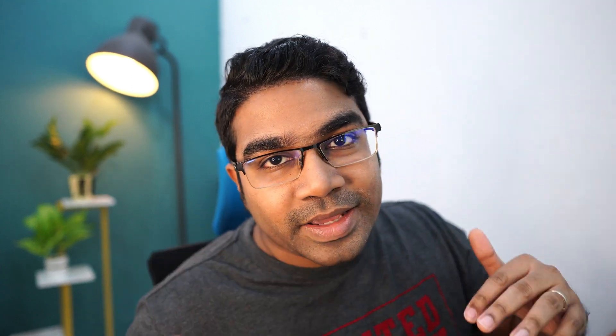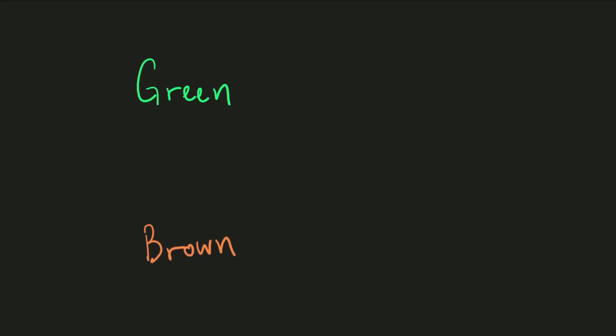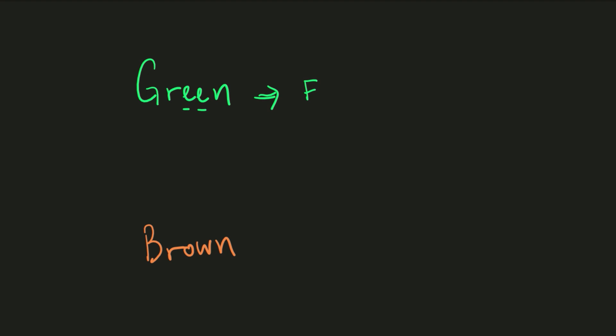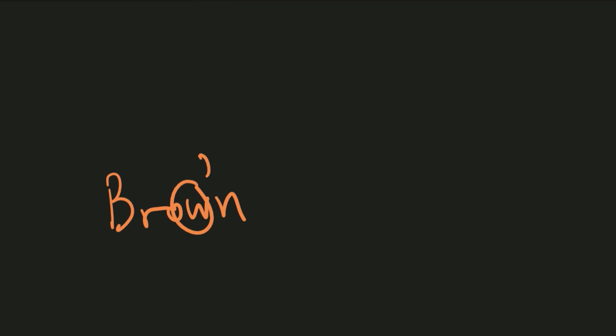A common confusion when it comes to colors of salts is iron(II) vs iron(III). To help remember: look at the word 'green' — it has two e's, making it the color of Fe2+ in solution. For 'brown,' it contains a 'w' — when you rotate w 90 degrees you get the number 3 — so brown is the color of Fe3+ in solution.